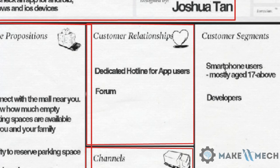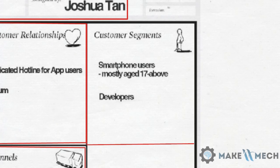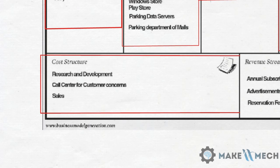Customer relationship is straightforward — it is the type of relationship with the customer and how you will interact with them. Some types include personal assistance, dedicated services, community, and co-creation. Next, and most importantly, is the customer segment — who is your target market? Types include niche markets, general or mass market, and diversified customers.